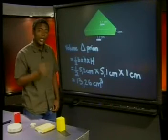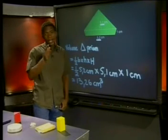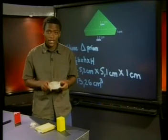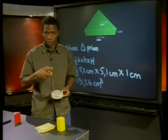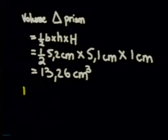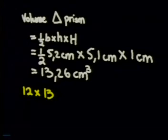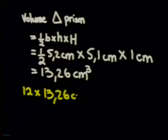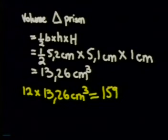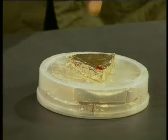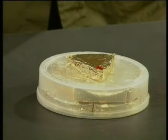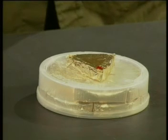How close was your estimate to this? Since the container holds 12 of these wedges, we can say that the container holds approximately 12 times the volume of this wedge. So 12 × 13.26 cm³ = 159.12 cm³. So now you know that when you buy a box of these cheese wedges, you're getting approximately 159 cubic centimeters of cheese.